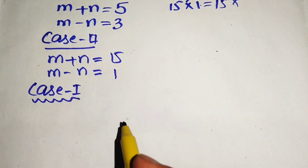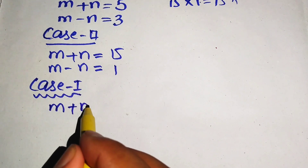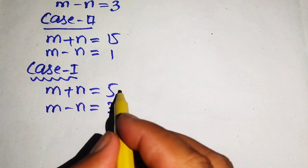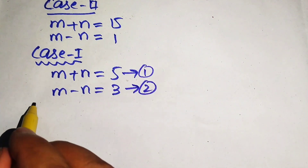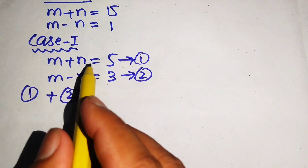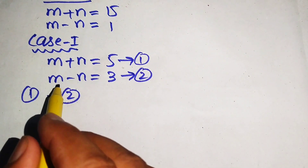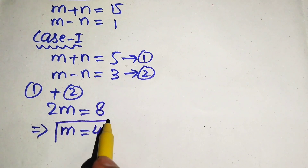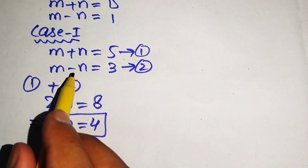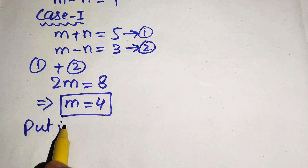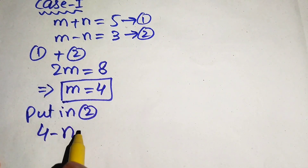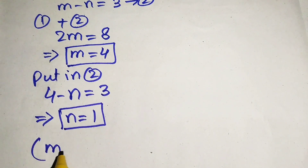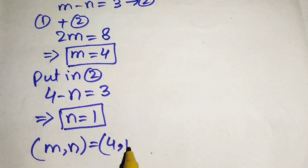For Case 1: equations are m plus n equals 5 (equation 1) and m minus n equals 3 (equation 2). Adding both equations, the n terms cancel and we get 2m equals 8, so m equals 4. Substituting m equals 4 into equation 2: 4 minus n equals 3, giving n equals 1. So the first natural number solution is m equals 4, n equals 1.